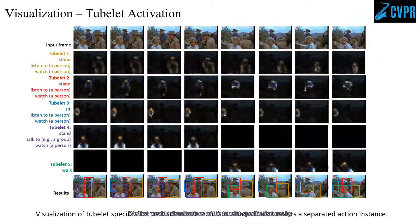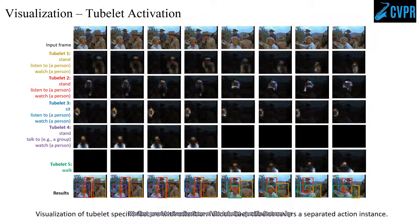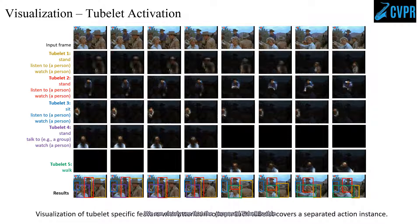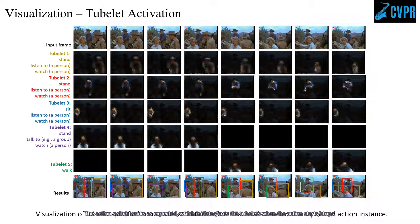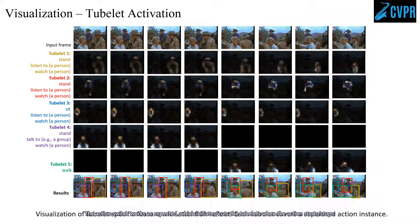We provide visualizations of tubelet-specific features by overlaying the tubelet-specific feature activations over input frames using attention rollout. We can clearly see that TubeR is able to generate highly discriminative tubelet-specific features. The action switch works as expected, initiating or cutting tubelets when the action starts or stops.